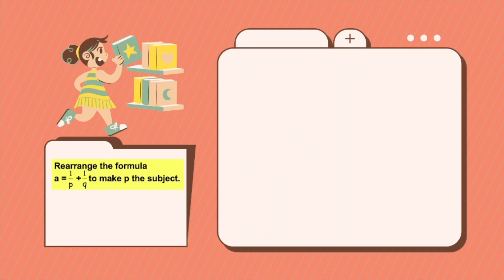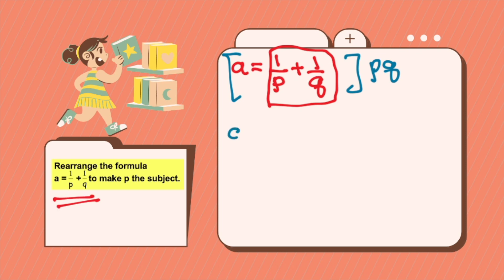Now let's try more examples. Let's say you are asked to rearrange the formula a equals 1 over p plus 1 over q and making p the subject. So since this is a fraction, we will multiply both sides by pq. So multiplying both sides by pq, you will have apq equals, p will cancel here, so that's 1, so it's q plus, q cancels here, so you're left with p, that would be p.